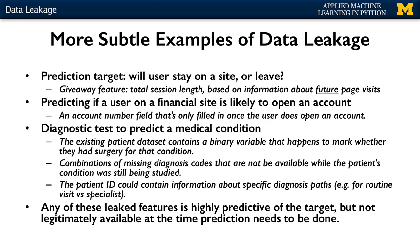One classic case of data leakage happens when information about the future that would not legitimately be available in actual use is included in the training data. For example, if you're developing a retail website classifier to predict whether a user is likely to stay and view another page or leave the site, a leaked feature would be the user's total session length or total number of pages viewed during their visit. This feature contains future information — namely how many more visits the user is going to make — which is impossible to know in actual deployment. A solution is to replace it with a page-visit-in-session feature that only knows the total pages visited so far.